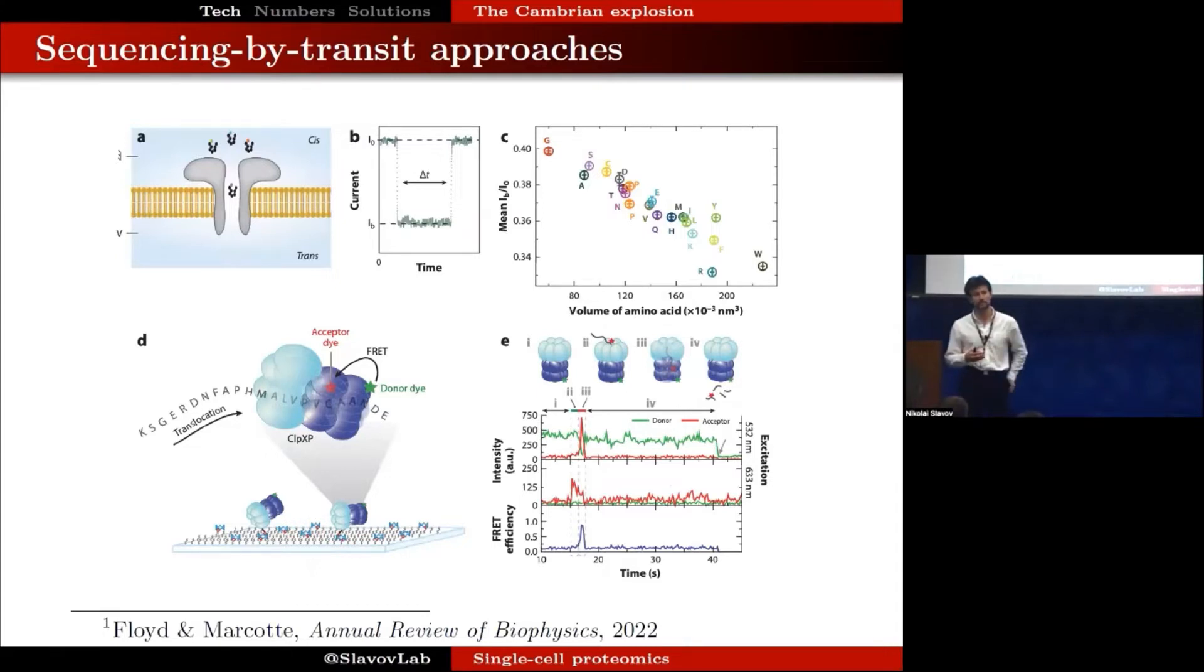Part of the enthusiasm for these methods is thinking that because they work at the single molecule level, they can confer to proteomics some of the benefits that single molecule DNA sequencing approaches have conferred to genomics and transcriptomics, such as Illumina sequencing.